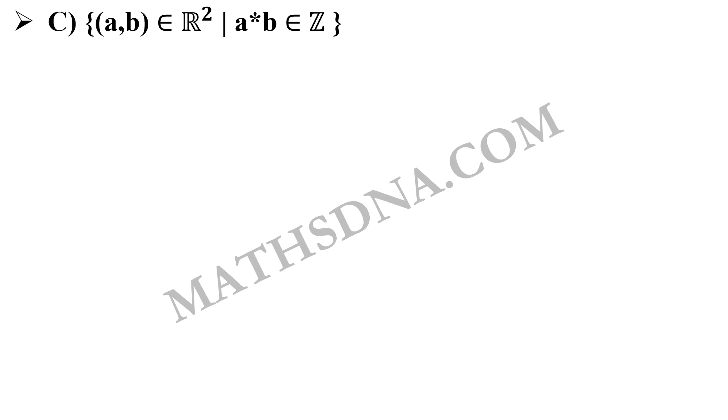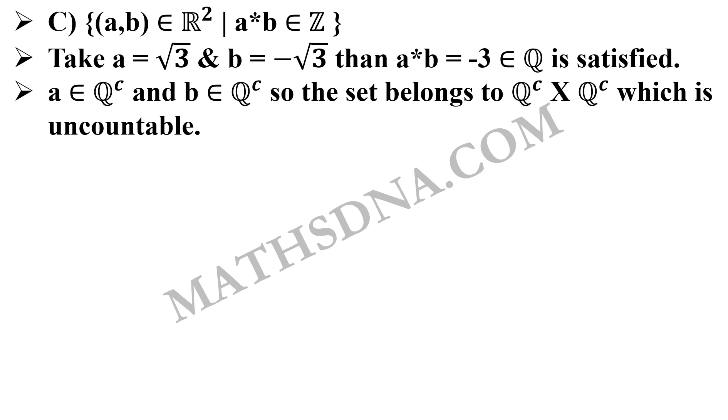So let us take a = √3 and b = -√3. Then a·b will be -3, which belongs to Q and as well as Z. So it is satisfied, and thus option C will also be uncountable.